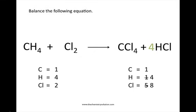Comparing the types and numbers of atoms on each side, we still have one carbon atom on each side and four hydrogen atoms on each side. But on the product side we have eight chlorine atoms, while on the reactant side we only have two. So to balance chlorine, we're going to add a coefficient of four in front of Cl2. With four molecules of Cl2, we now have eight chlorine atoms on the reactant side — four times two equals eight.